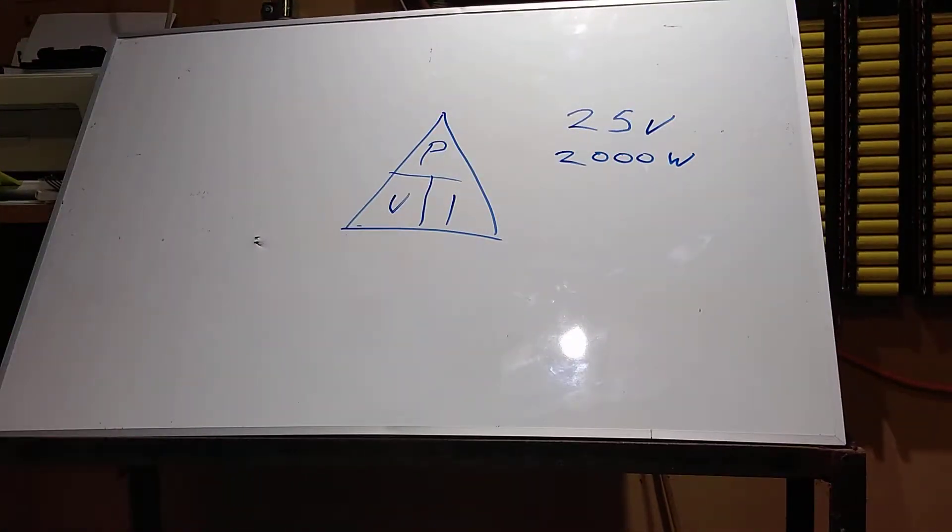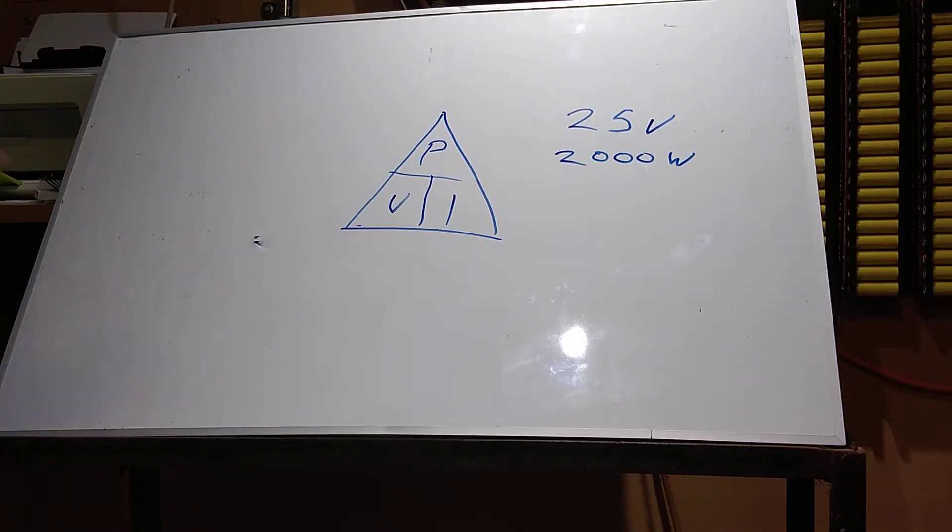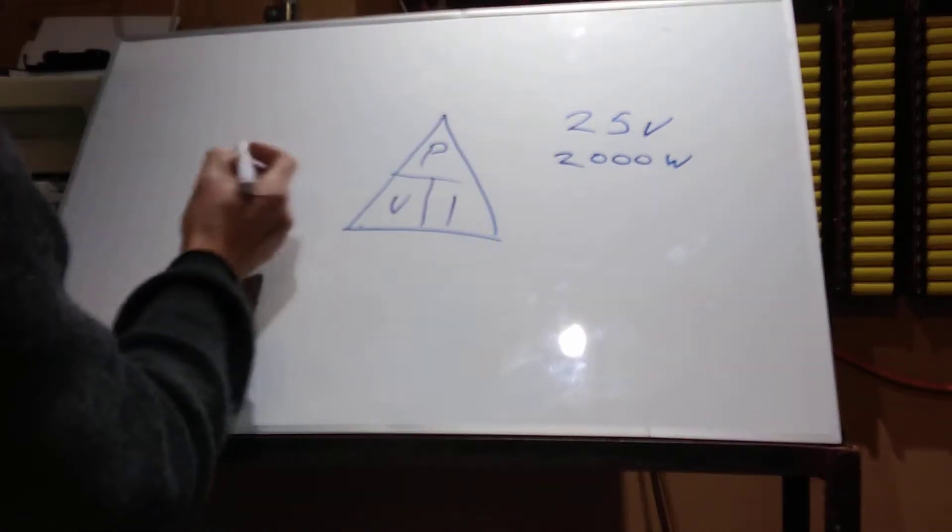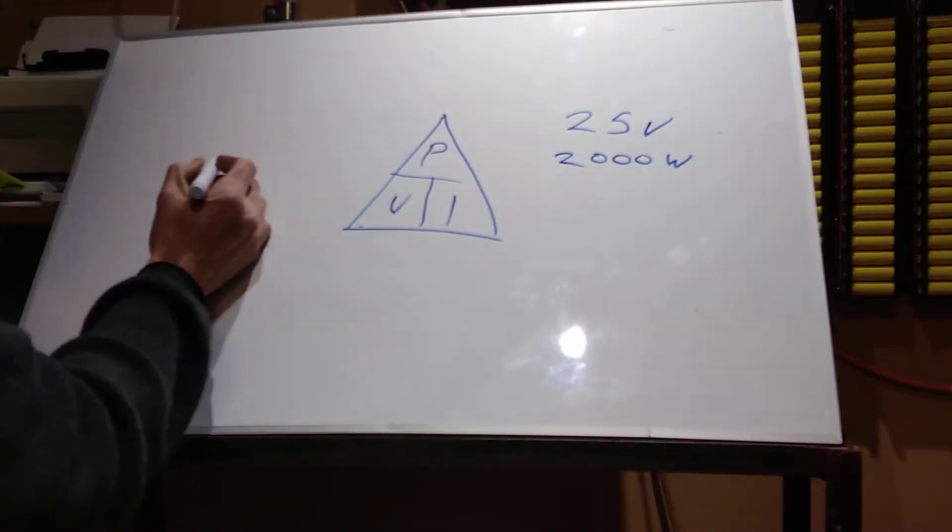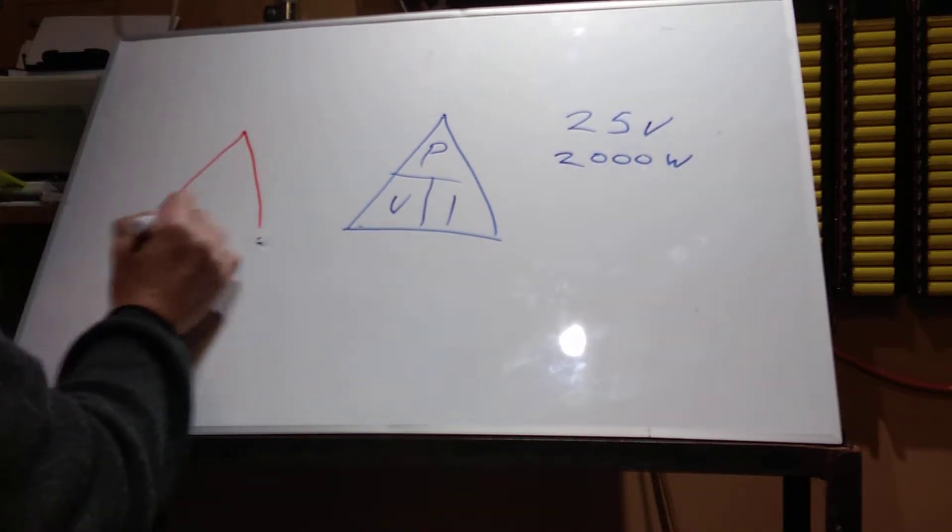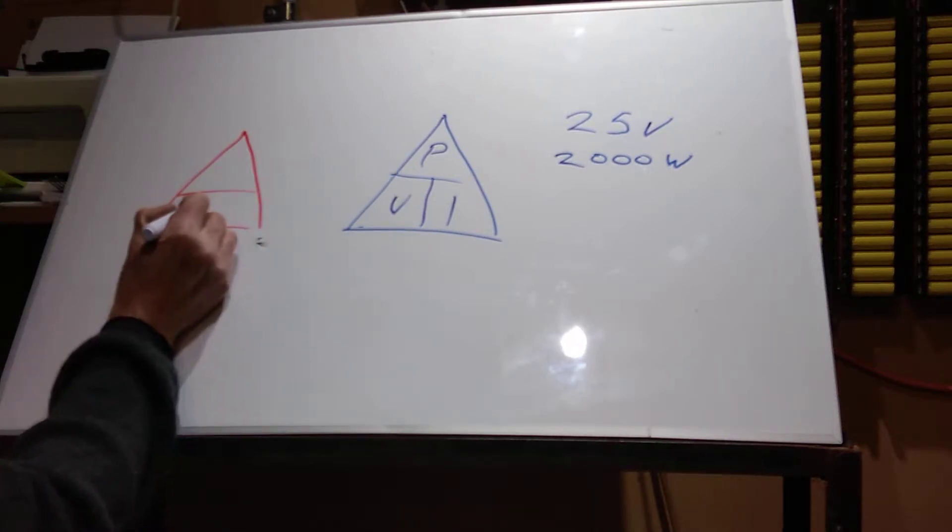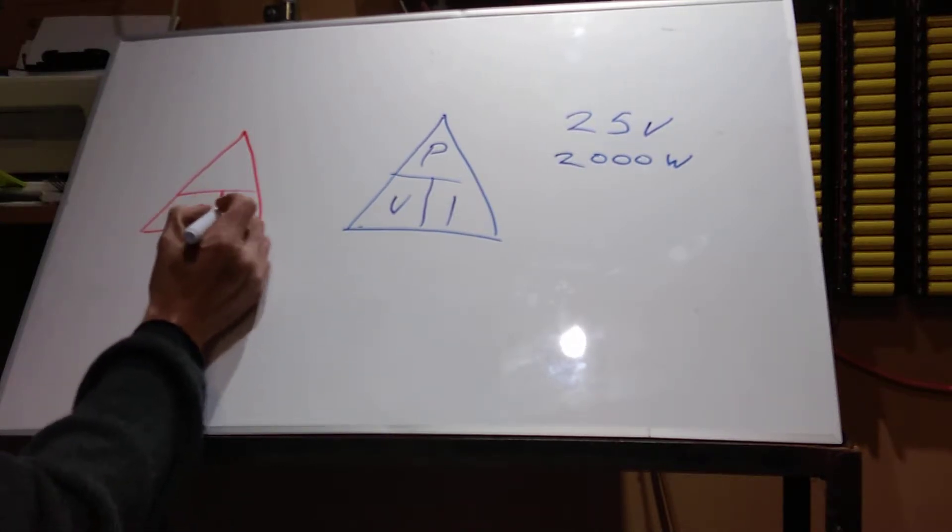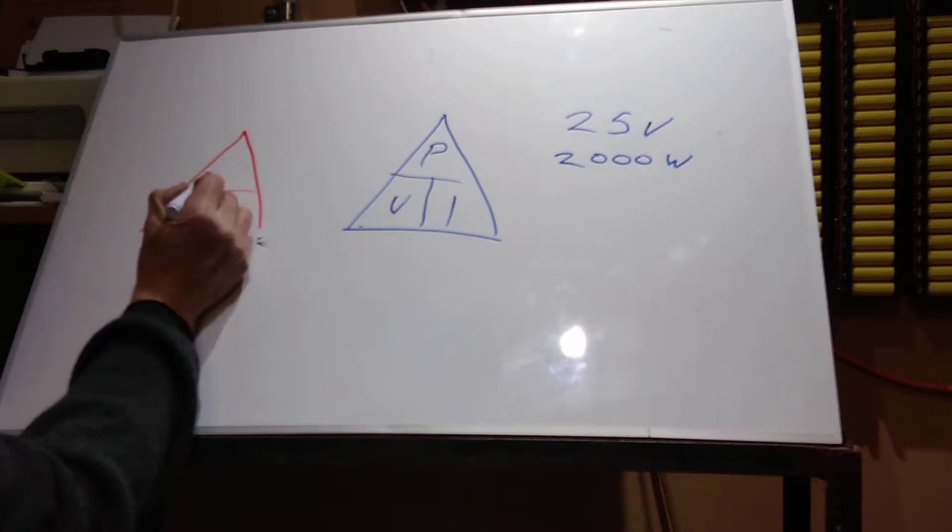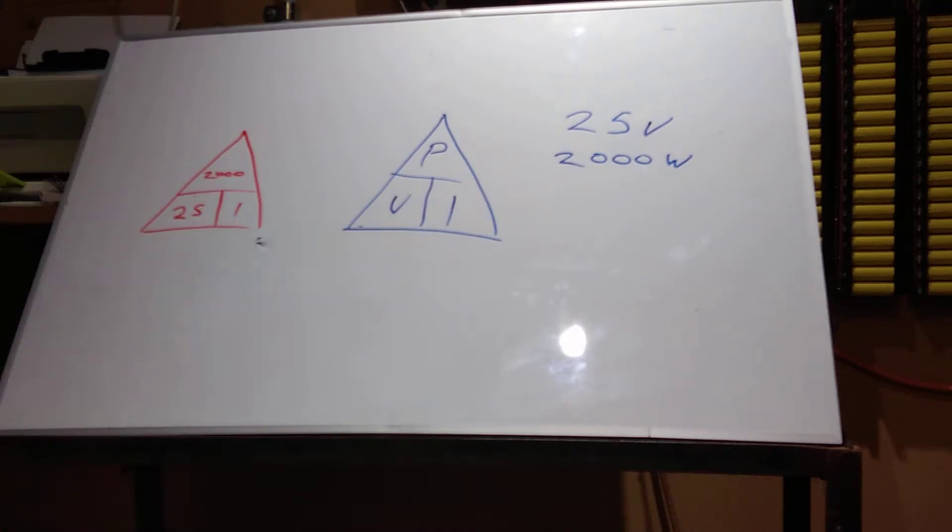So if we go to a little triangle, if we put those in, we can find out how much current, how many electrons are going through that wire. So in a triangle, V equals 25, P is 2,000, and I. That's what we're trying to find out.